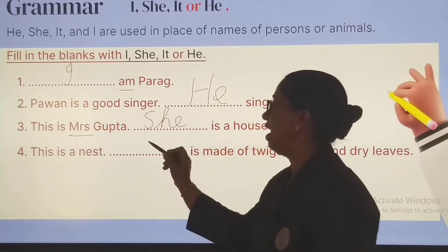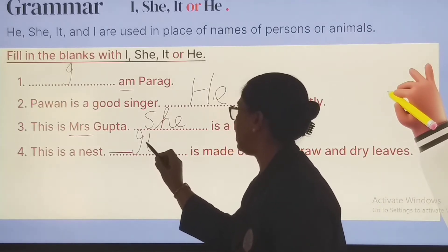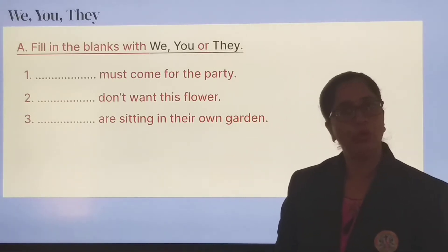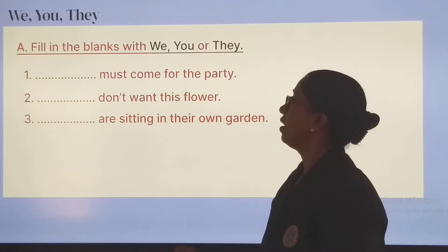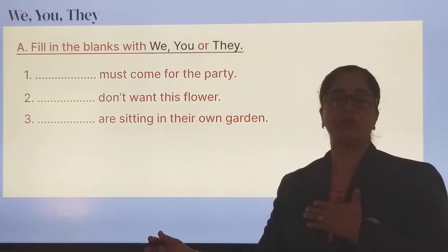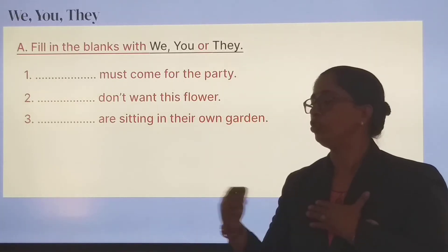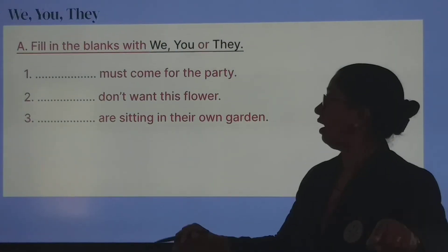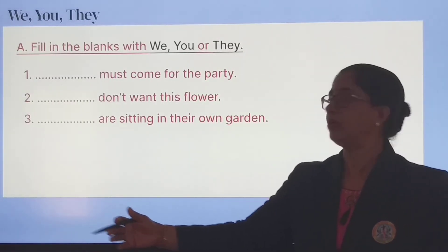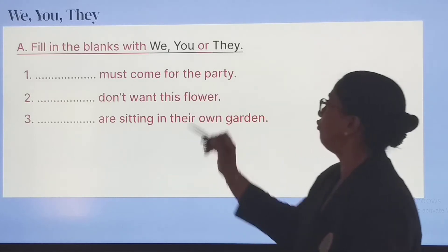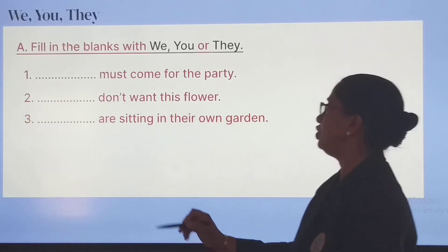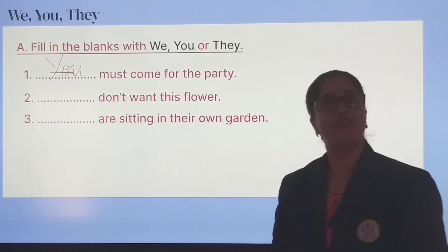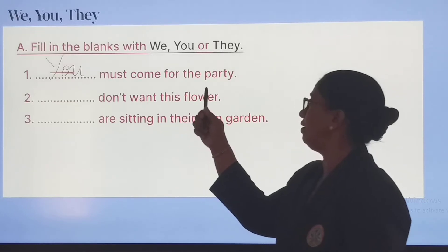For non-living things we use it. Next is the use of we, you, and they. We use we when you and your friend are together, and they when there are many people — more than one. For the blank 'dash must come for the party', if you are telling your friend, you will put you — You must come for the party.